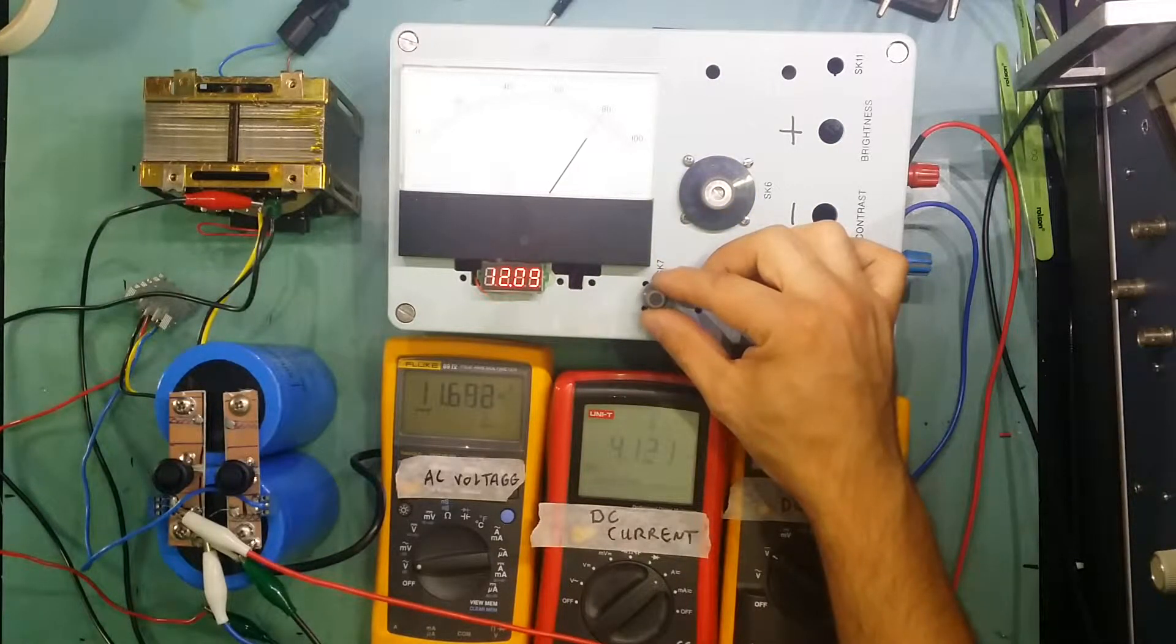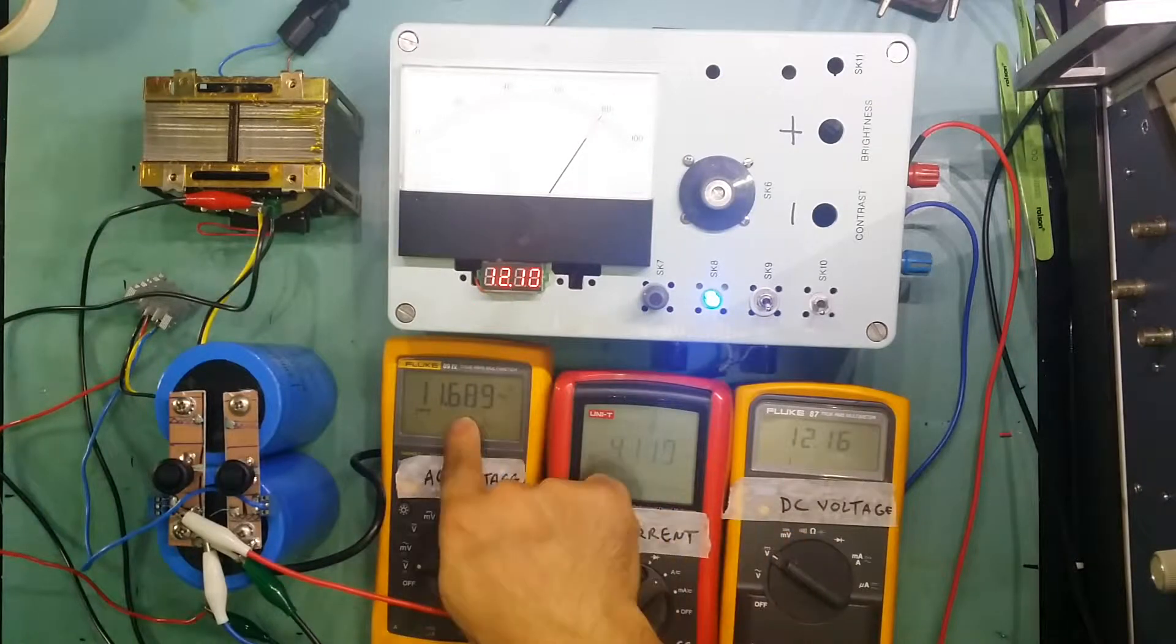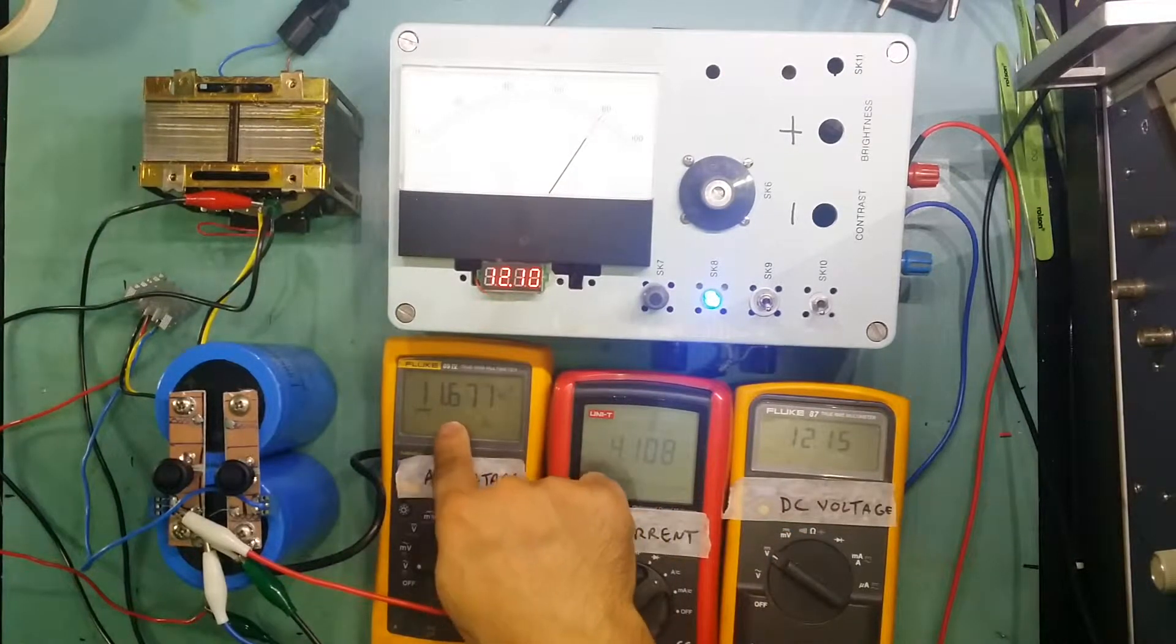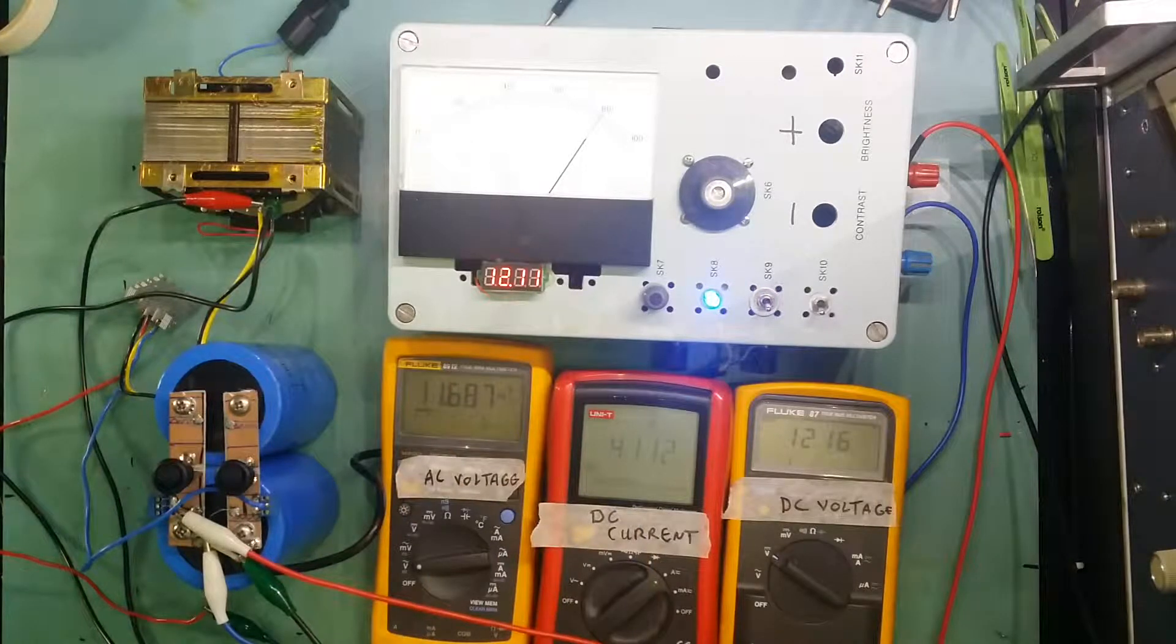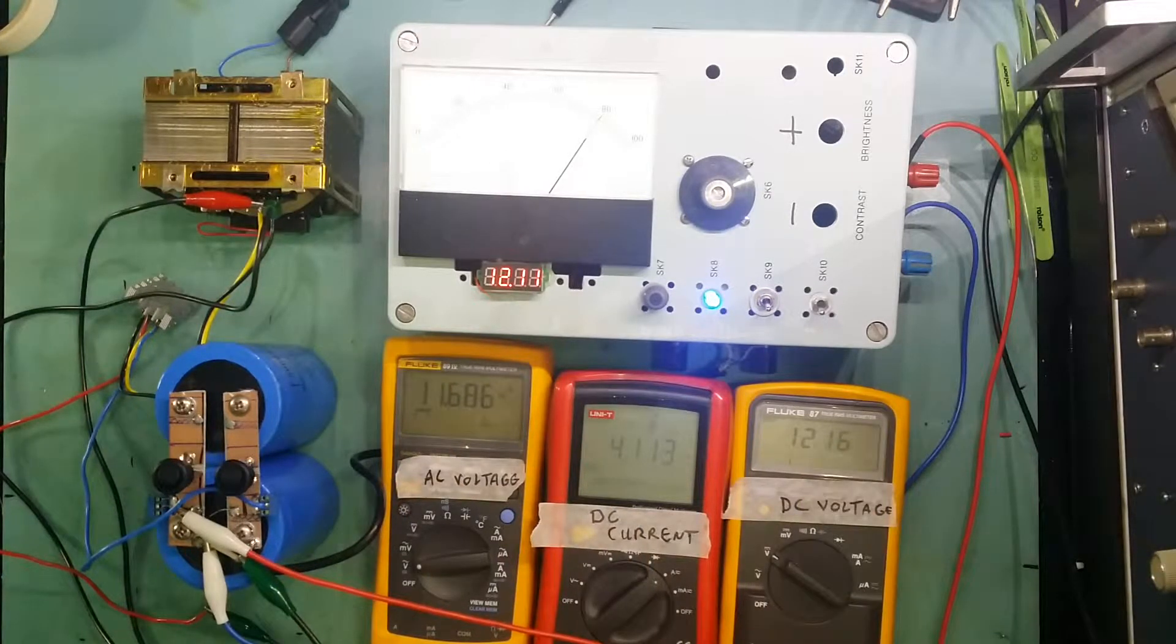So let's go to 4 amp. That's 4.1, the AC side is 11.6, so that's almost 600 millivolt drop. The DC side is 12.16.